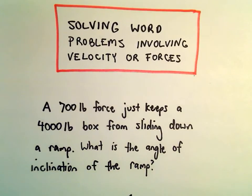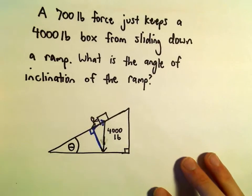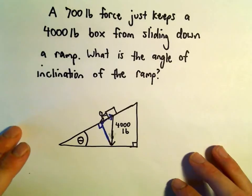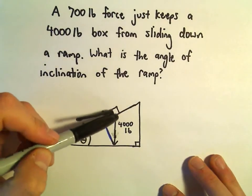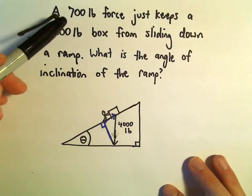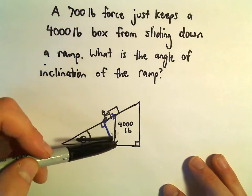Okay, so one more example here solving word problems involving velocity or forces. So suppose you've got a 4,000 pound box here that's on a ramp and a 700 pound force is keeping it, just barely keeping it from sliding down.